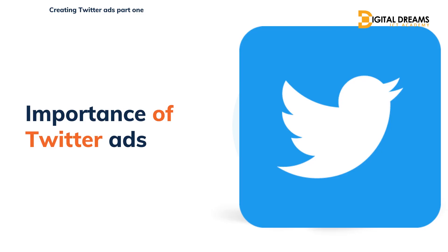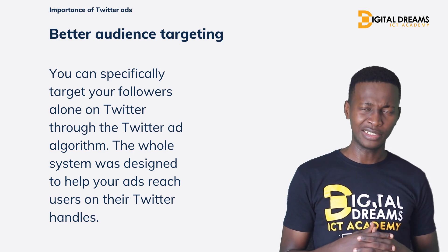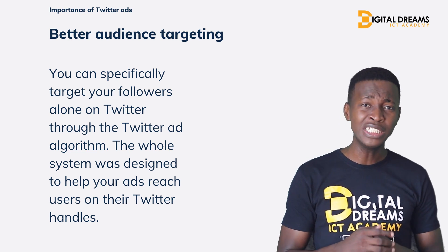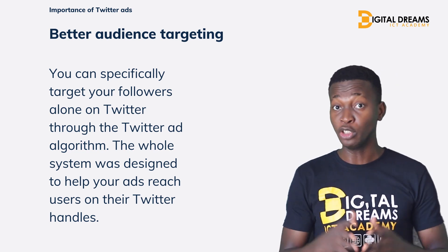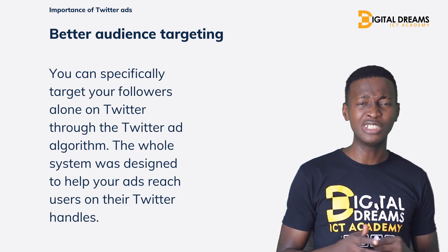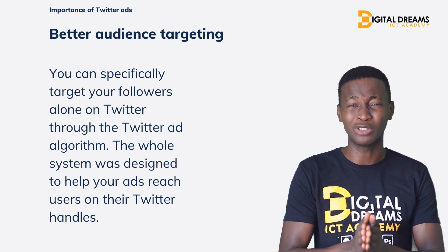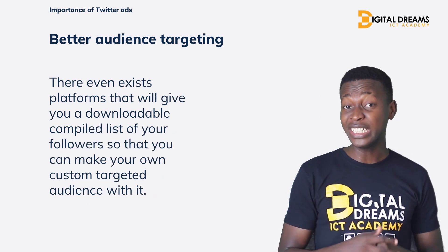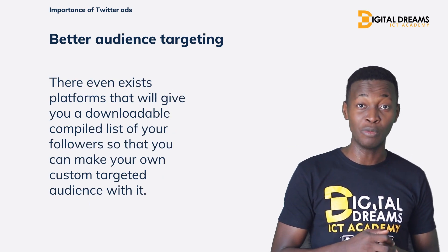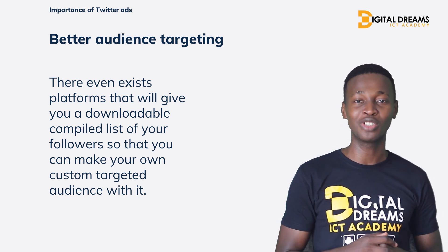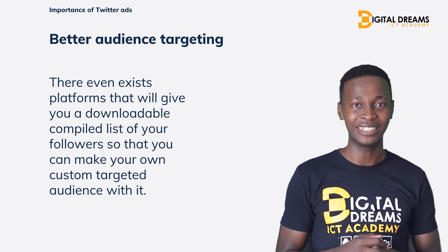Now let's hop into the next outline: the importance of Twitter ads. First is better audience targeting. You can specifically target Twitter ads to only your followers — people that are following you on Twitter. This is done through the Twitter algorithm system, which is designed to market to your followers based on their handles. There even exists an online platform where you can download a compiled list of your followers to help you create your own custom audience for advertising and marketing.